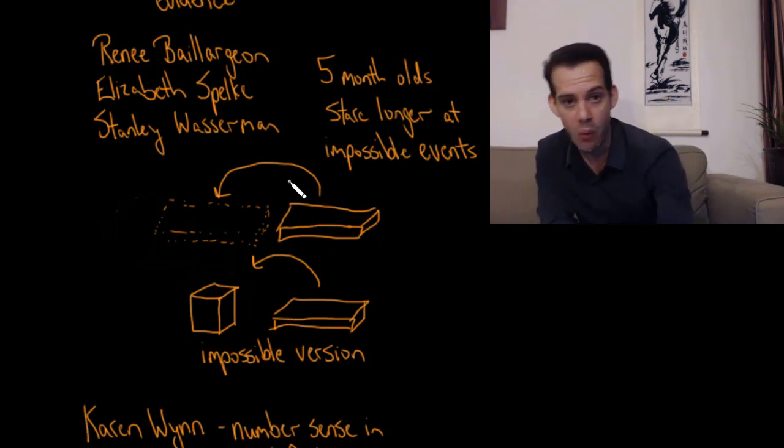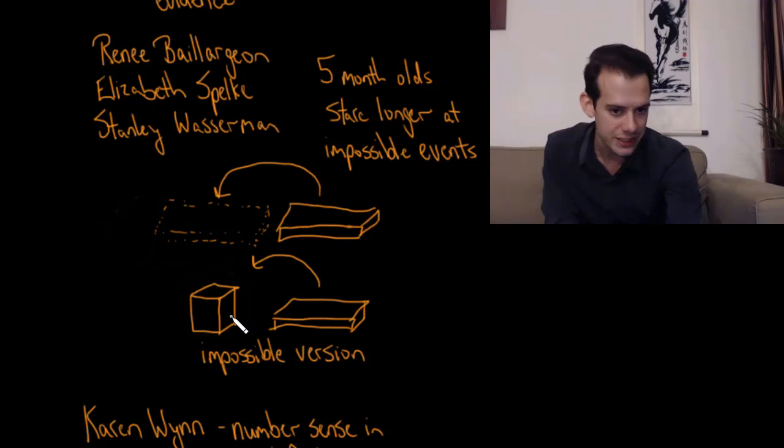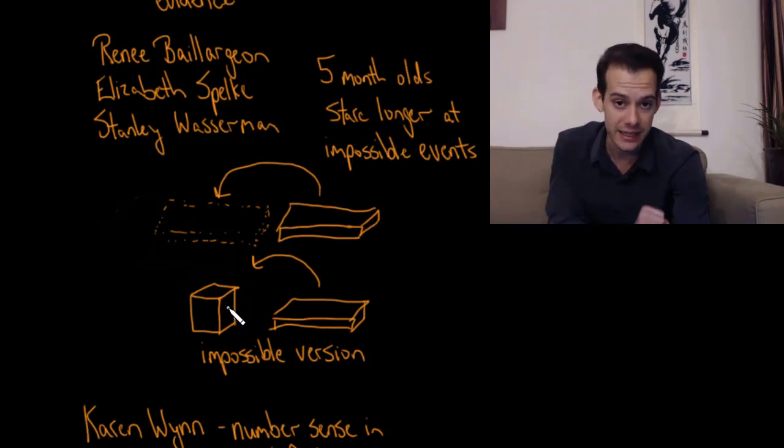Once they're habituated to the boring version, the researchers switch it to an impossible version of the event. It's the same thing, this plank is going to rotate, but there's a box or an object in the way here. The infant watches as this panel goes up and comes back, and then unbeknownst to the infant the object is secretly taken away, so the plank continues its rotation all the way till it's flat again.